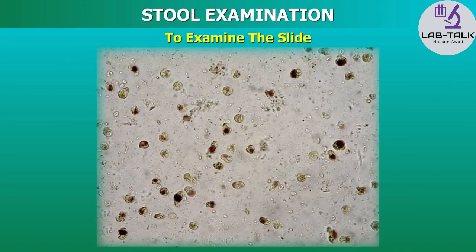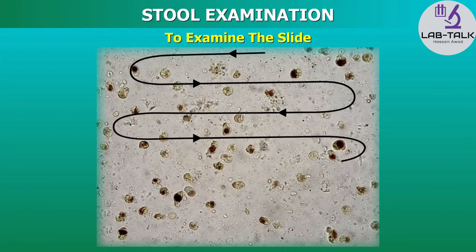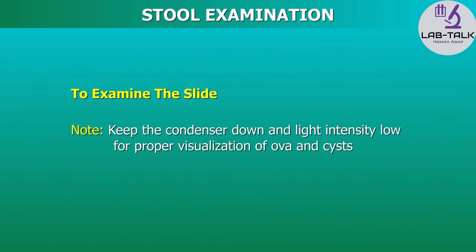Put the slide with the mounts on the microscope stage and focus on the mount with the low power objective first. Systematically scan the entire cover slip area using the 10x objective in a zigzag manner. If something suspicious is seen, a higher magnification may be necessary. Note: It is preferable to keep the condenser down and the intensity of the light low for proper visualization of ova and cysts.